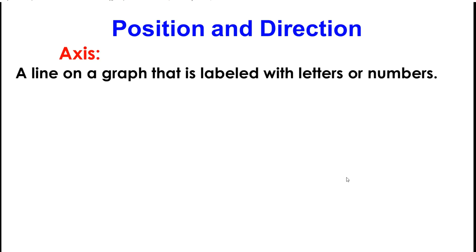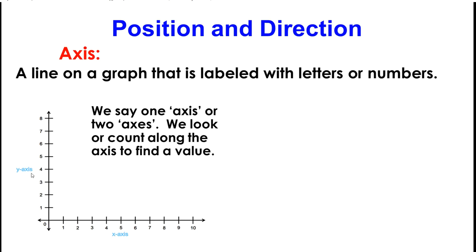Axis. A line on a graph that is labeled with letters or numbers. This is an example of an axis. We have the x-axis and the y-axis. We say one axis or two axes. We look or count along the axis to find a value.